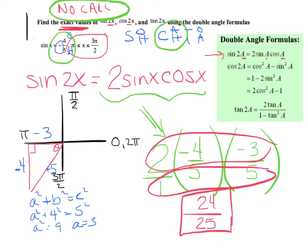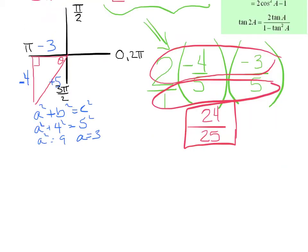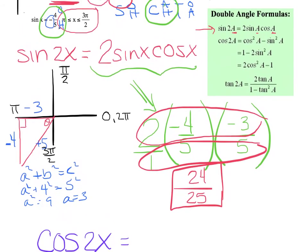Now we also need to find the cosine of 2x. The nice part is I don't need to redraw the picture — I just need to pick the smartest formula. For cosine of 2x I have three options to choose from. Here's how you pick the smartest choice: look at what's given to you. I know the sine of x, so I'm going to pick the formula that only deals with sine. This one deals with both — I almost never pick that if I don't have to. So I'm going with 1 minus 2 sine squared x.